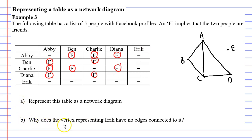Question B says, why does the vertex representing Eric have no edges connected to it? Well, we just mentioned Eric has no friends.